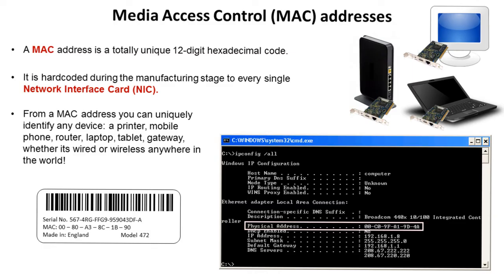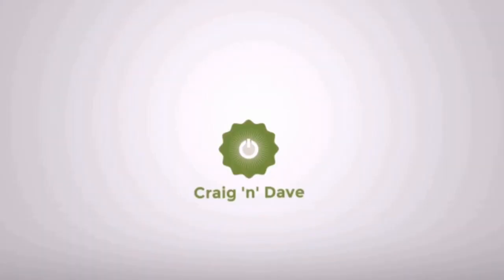MAC addresses are what's known as physical addresses — they never change. They're actually hard coded during the manufacturing stage to every single network interface. Every device that connects to the network or the internet will have a network interface card. If you get a router or a laptop you can probably turn it over and see a sticker with its MAC address. At the command prompt in Windows, typing 'ipconfig /all' gives you the physical MAC address — it's a series of 12-digit hexadecimal codes. From a MAC address you can uniquely identify any device: a printer, a mobile phone, a router — wired or wireless, anywhere in the world. MAC addresses operate on layer two.